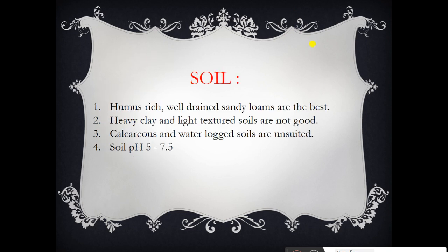Regarding soil, citronella requires rich humus, well-drained sandy loam soil, which is best for cultivation. Heavy clay and light textured soils are not good. Calcareous and waterlogged soils should be avoided. Soil pH ranging between 5 to 7.5 is good for cultivation of citronella grass.